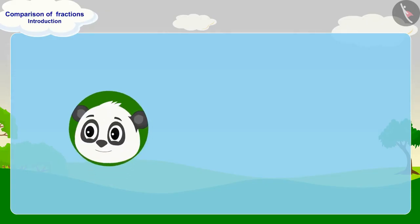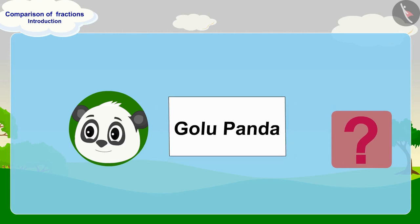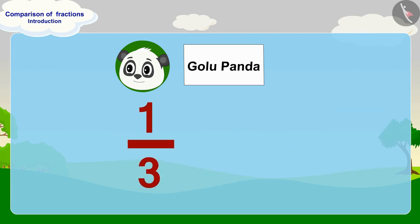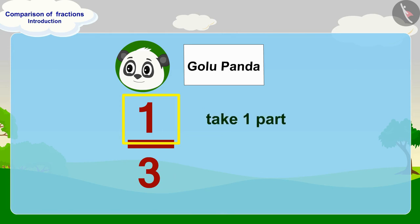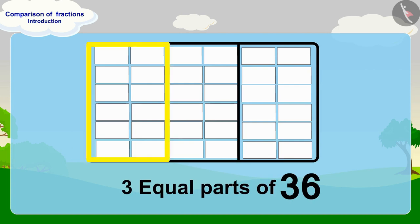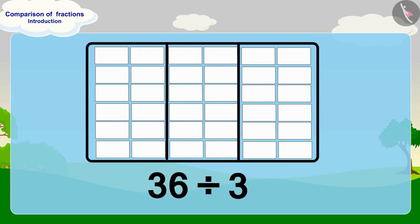Let's first find out how many pieces of paper Golu has written his name on. Golu's name is written on one third of 36. Here, three tells us how many equal parts to divide the whole into, and one indicates that we take one part out of three. We have 36 as the whole. If we make three equal parts of 36, each part will have 36 divided by 3, which is 12 pieces.